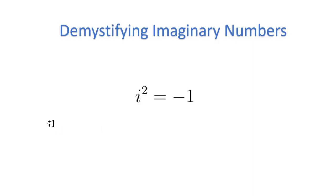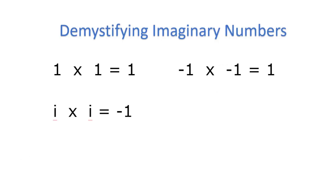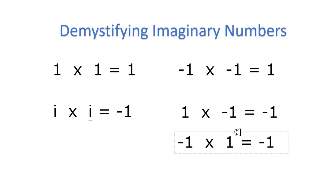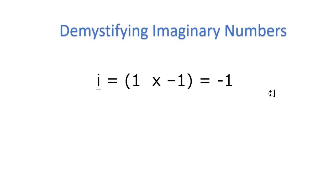Let's take a few steps back and look at what we do know. We know that one times one is equal to one, and we also know that negative one times negative one is also equal to one. We are told that i times i — i squared — is equal to negative one. So how do we make sense of this? What else equals negative one? One times negative one. So technically, i is equal to one times negative one, or negative one times one.